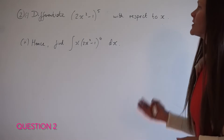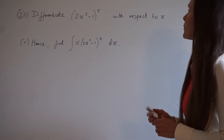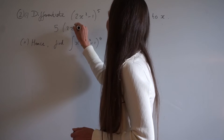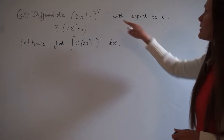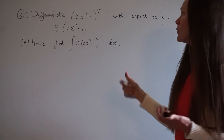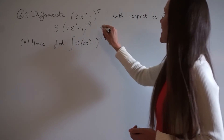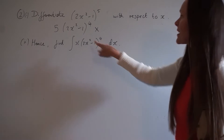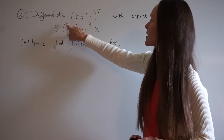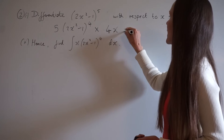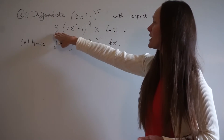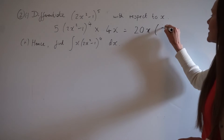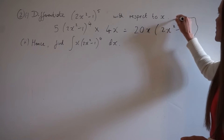In question 2 part 1, we differentiate (2x² - 1)⁵ with respect to x. Take the power 5 outside the brackets and multiply the brackets by this power. The part inside the brackets stays the same, and the power reduces by 1, giving 4 as the new power. Multiply everything by the derivative of the inside: differentiating -1 gives 0, and differentiating 2x² gives 4x, so we multiply by 4x. Simplifying: 5 multiplied by 4x is 20x, giving 20x(2x² - 1)⁴.